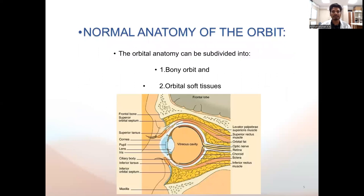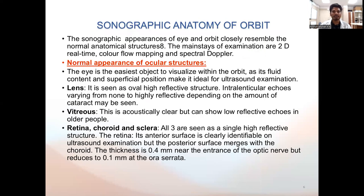This image shows normal anatomy of the orbit, which includes the bony orbit and the orbital soft tissues. The sonographic anatomy of the orbit: the eye is the easiest object to visualize within the orbit as its fluid content and superficial position make it ideal for ultrasound examination. The lens is visualized as an oval high-reflective structure with intralenticular echoes varying from none to highly reflective, depending upon the amount of cataract present. Vitreous is acoustically clear but can show low-reflective echoes in older people. Retina, choroid and sclera are seen as a single high-reflective structure.